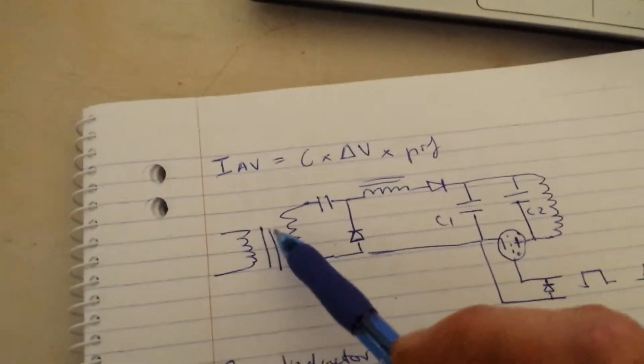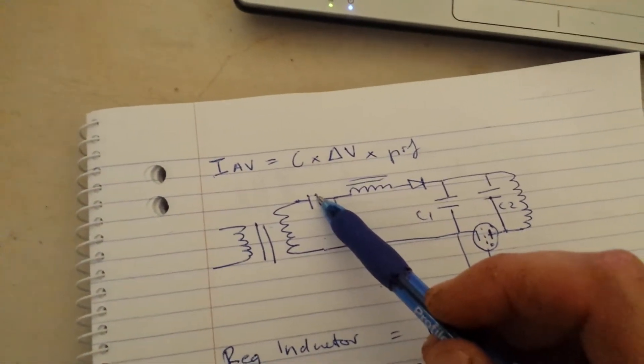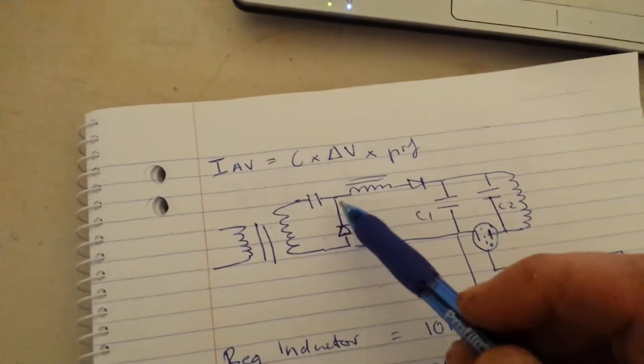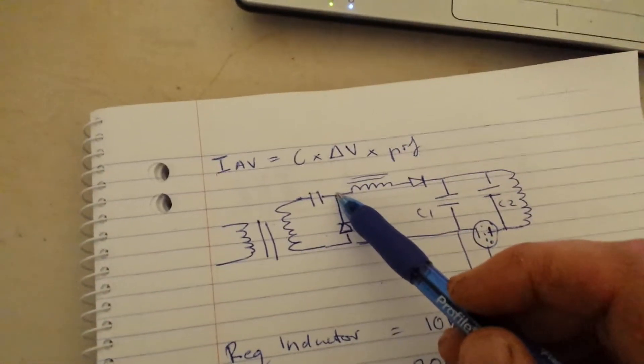You can see here I've got a microwave oven transformer, then a microwave oven capacitor, and that diode that gives me a voltage doubler, a half-wave voltage doubler.